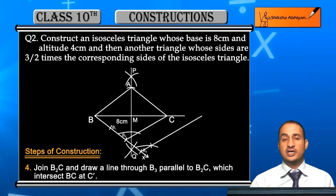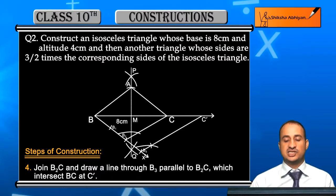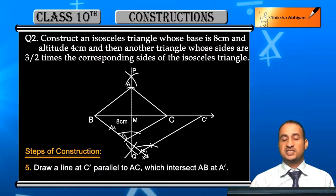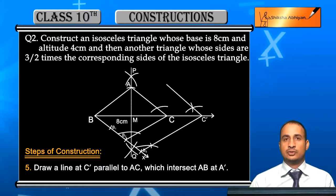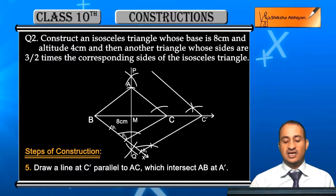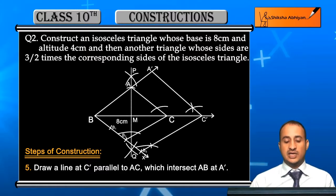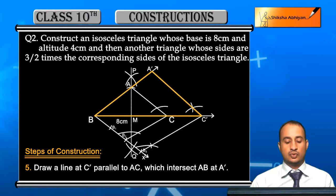The parallel line from B3 intersects the extended side BC at point C'. Now from C', draw a line parallel to AC, which intersects the extended AB at point A'. Therefore, triangle A'BC' is the required triangle, which is 1 and a half times — that is, 3/2 — the scale of the given triangle ABC. This is the required triangle we needed to construct.